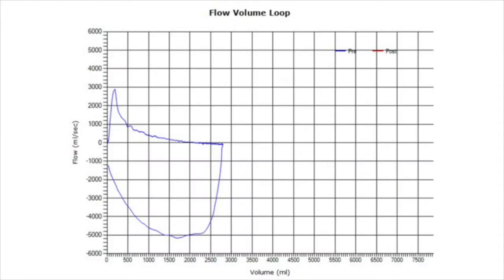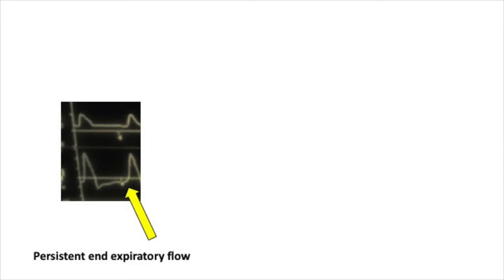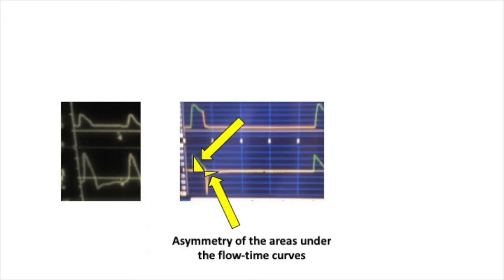Obstructive lung diseases, such as COPD and asthma, predispose patients to development of intrinsic PEEP. Auto-PEEP can be directly measured by performing an expiratory hold maneuver on the ventilator, which occludes flow through the ventilator circuit and thus equilibrates pressure between the patient's alveoli and the ventilator pressure gauge. There are also several indirect ways to assess for auto-PEEP, such as observing the expiratory flow curve, qualitative evaluation of symmetry under the flow-time curves, and recognition of ineffective trigger.